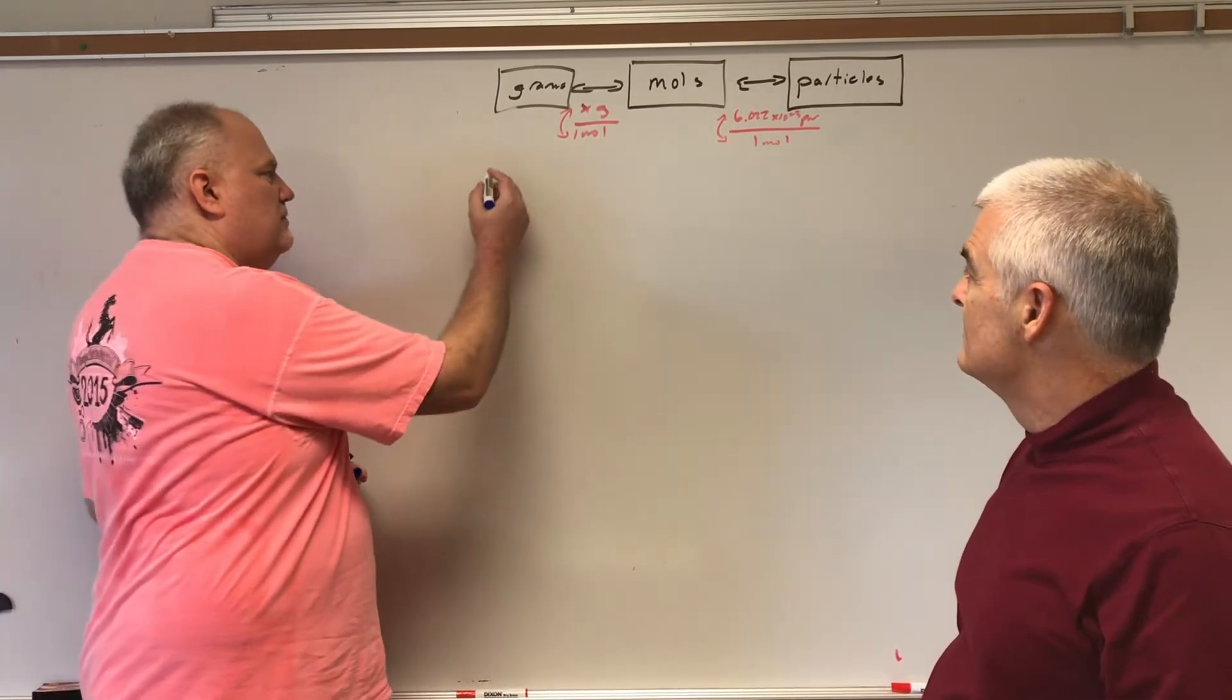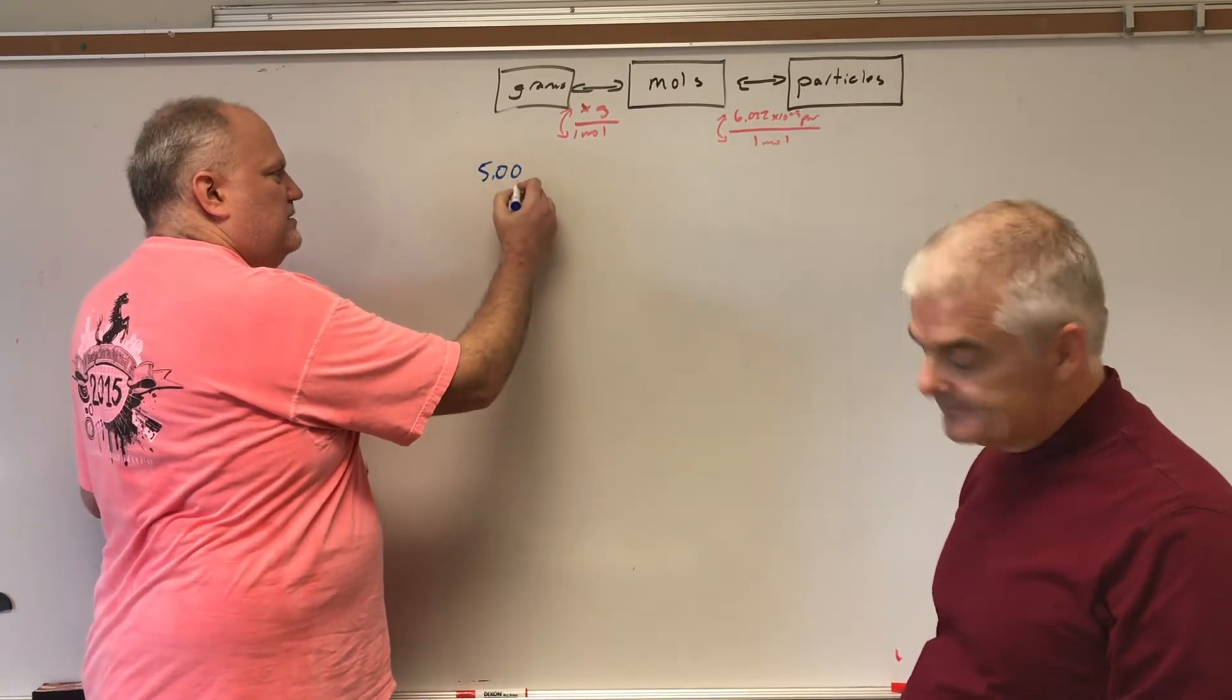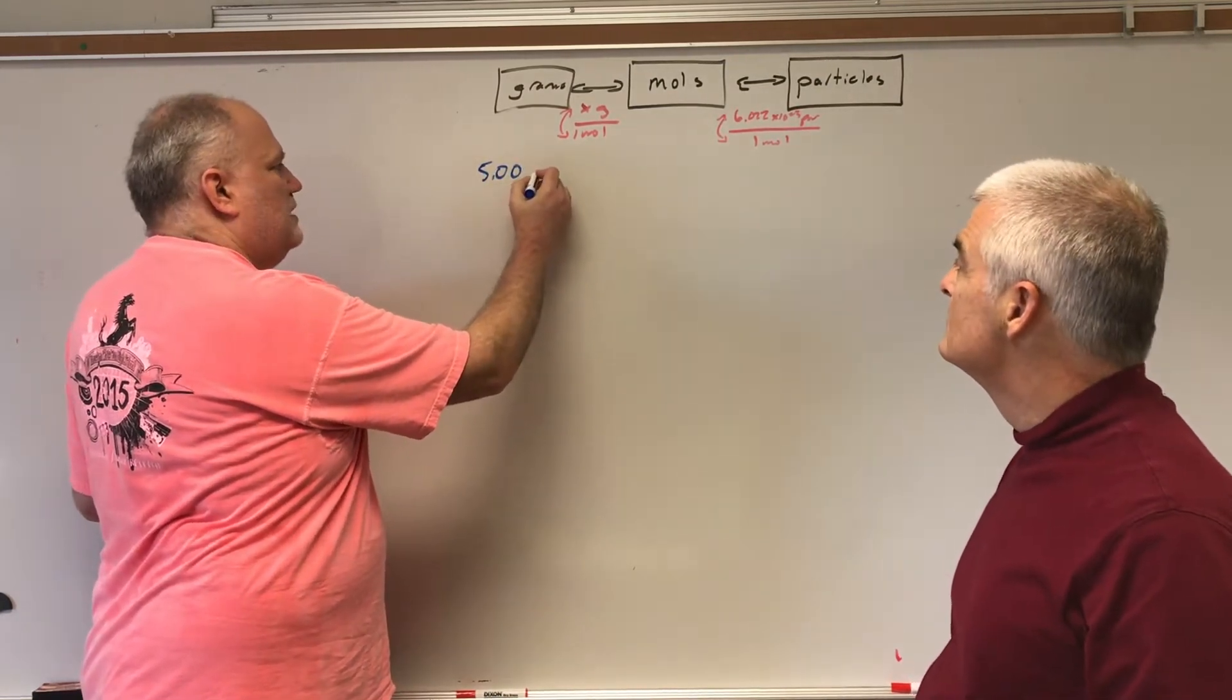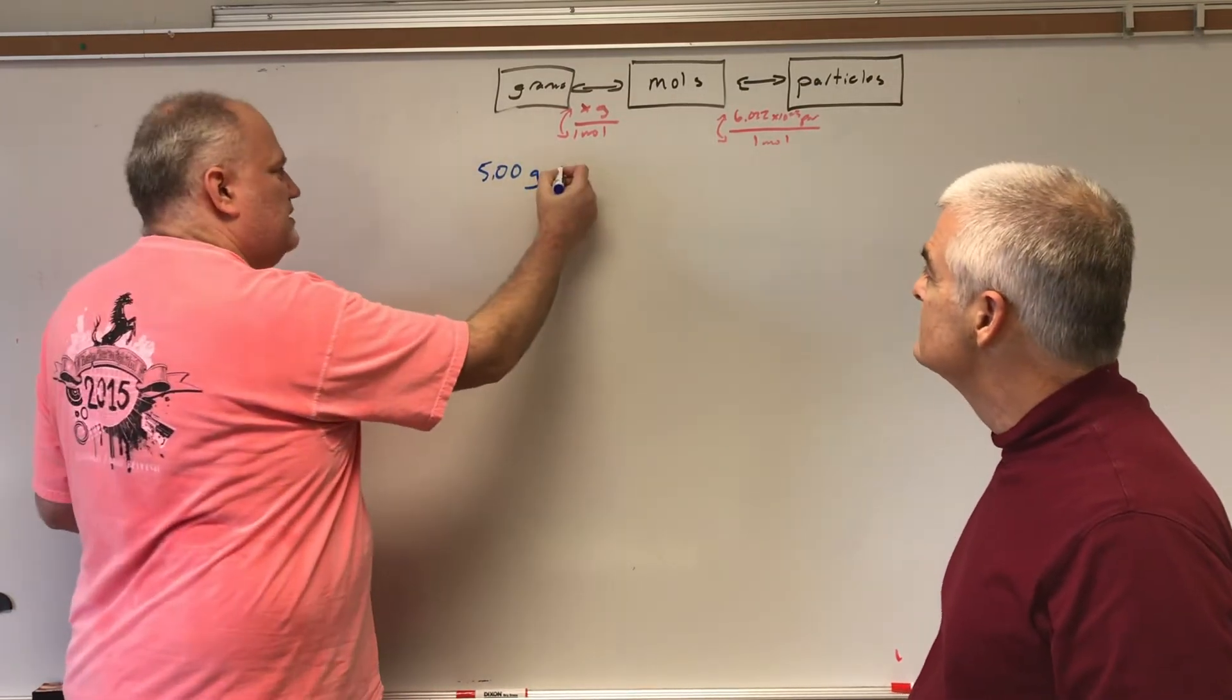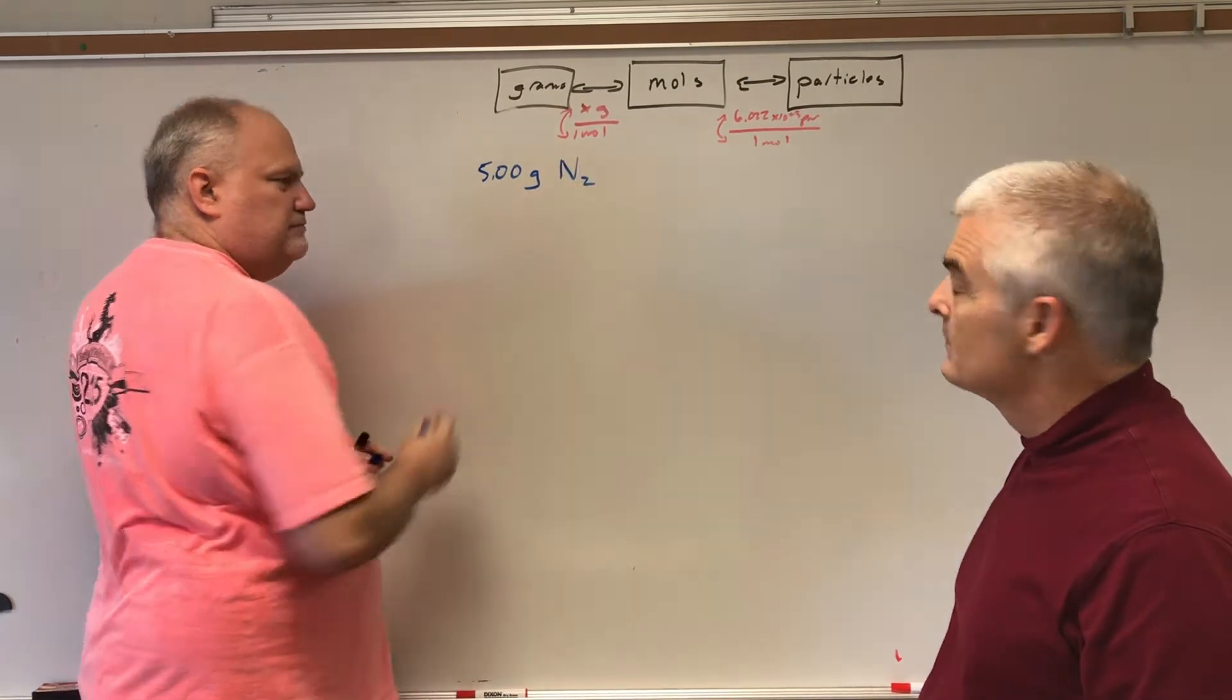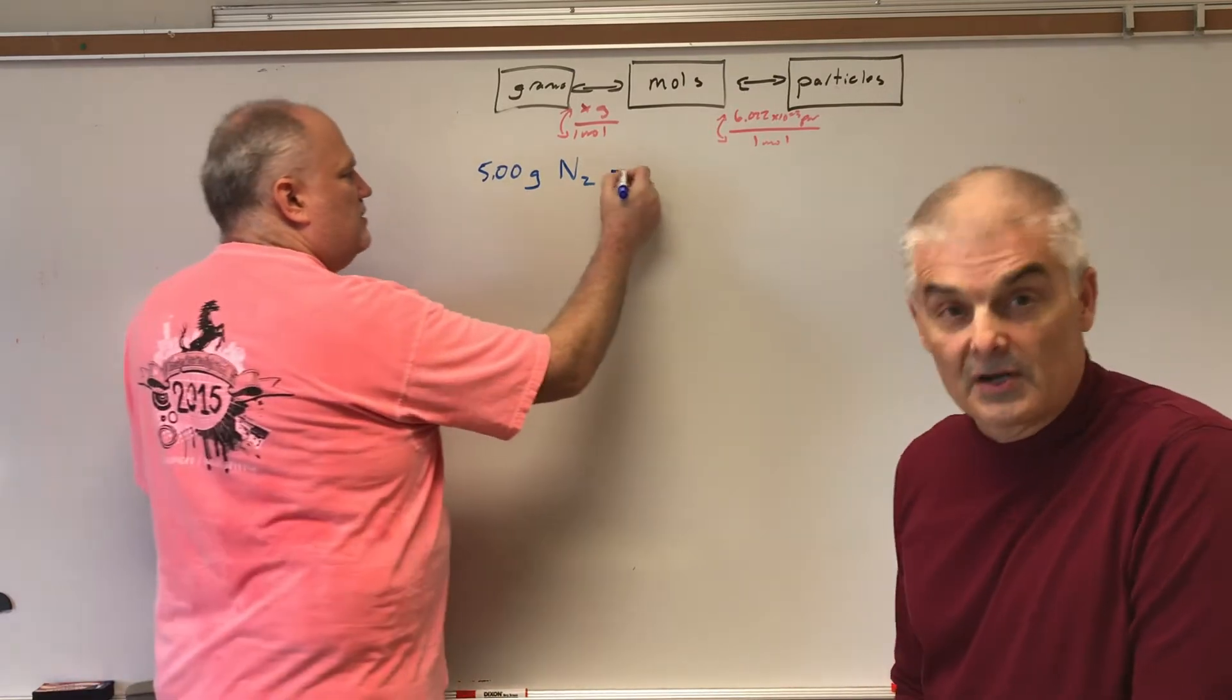Let's just throw out a problem. So let's start off with 5.00 grams of nitrogen. We're going to make it N2. Nitrogen is one of those diatomic molecules, and I want to convert to particles.